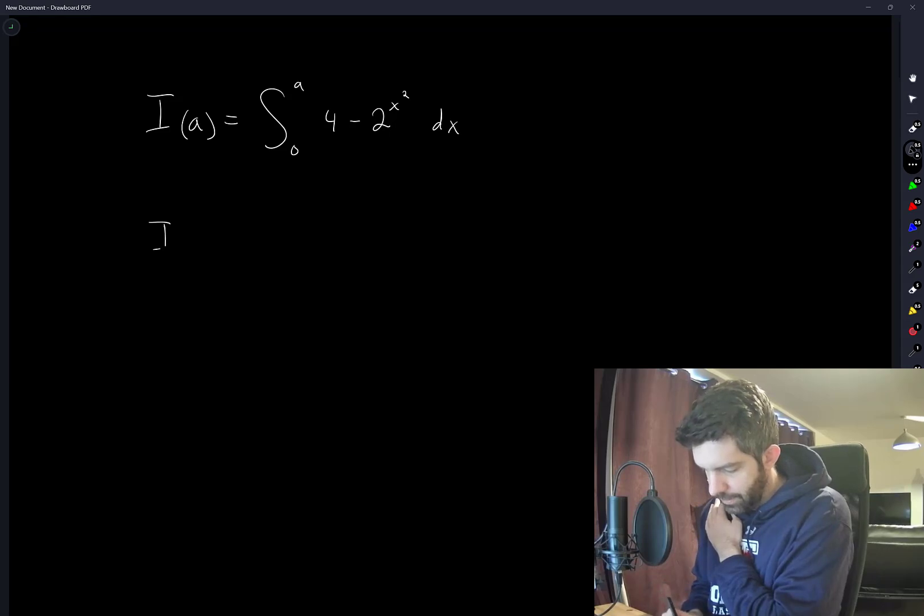So then I prime of a is equal to 4 minus 2 to the a squared. And we want to solve for when this is equal to 0.